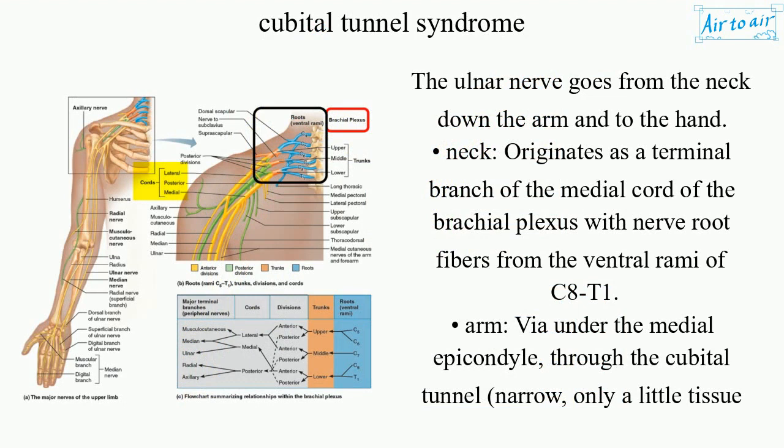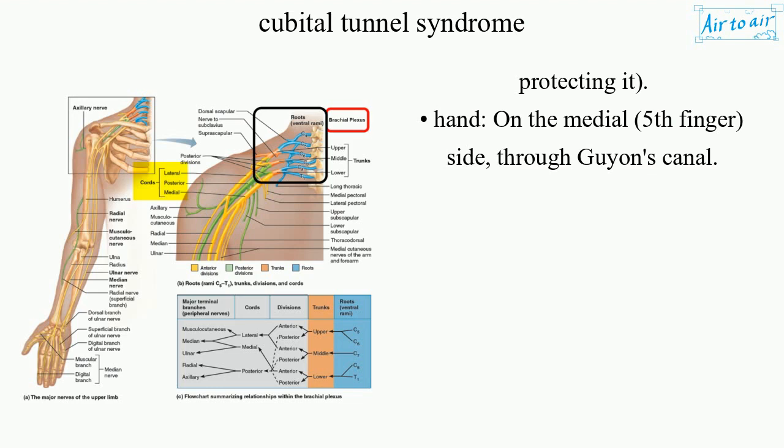Neck: Originates as a terminal branch of the medial cord of the brachial plexus, with nerve root fibers from the ventral rami of C8 and T1. Arm: Via under the medial epicondyle, through the cubital tunnel — narrow, with only a little tissue protecting it. Hand: On the medial fifth finger side, through Guyon's Canal.